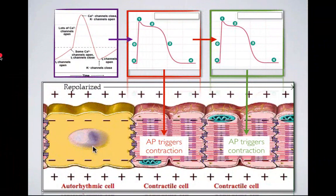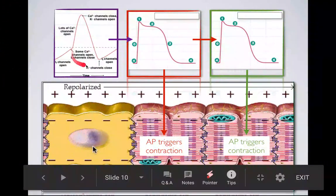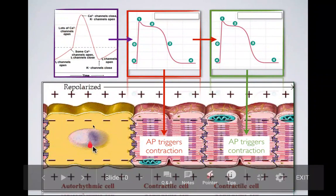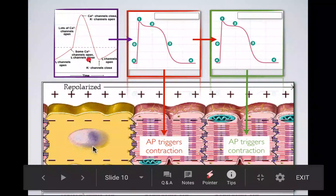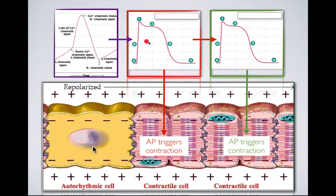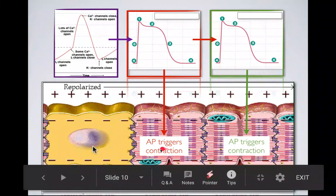As a recap of what we've seen so far, we start the sequence of excitation and contraction in the heart using autorhythmic cells that fire action potentials automatically. That spreads to neighboring contractile cells to generate their action potential, which then triggers contraction. And once a contractile cell has its action potential, it will also spread to neighboring contractile cells to cause them to contract too.